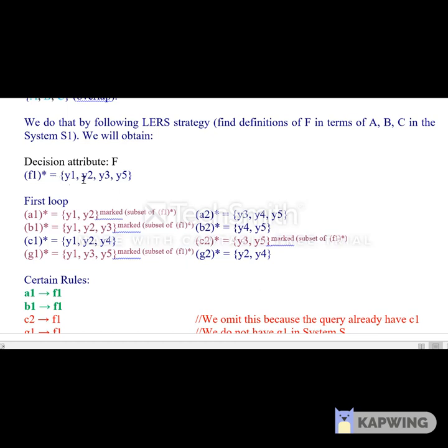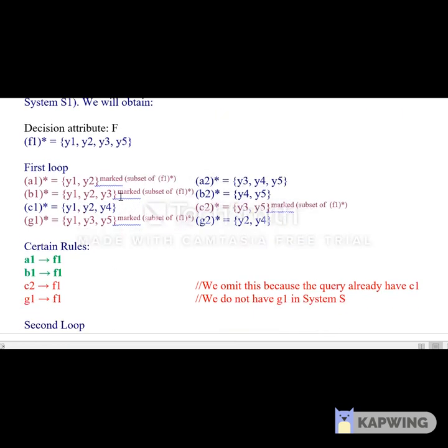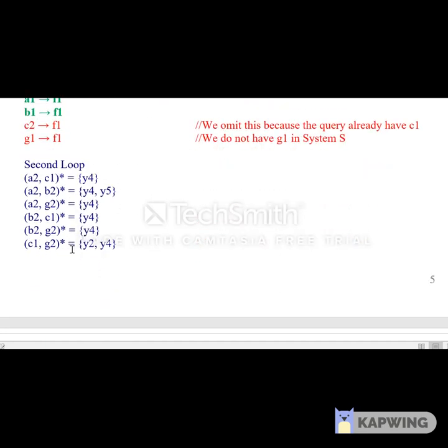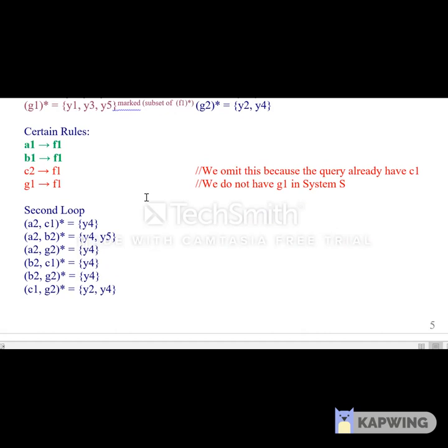Those sets that are marked fall under the certain rules, and here we need not consider G because G is not a common element. In this case we get C2→F1, but we omit this because the query only has C1 and getting C2 will be a change of state, so we omit C2→F1 and we consider only these two.